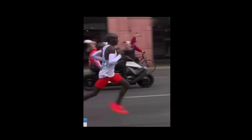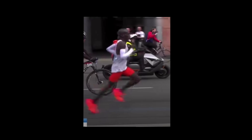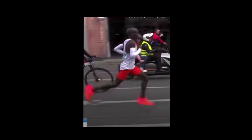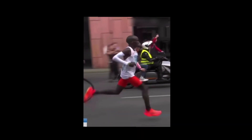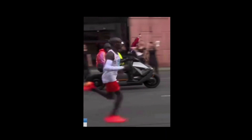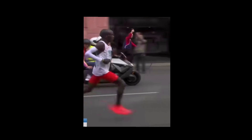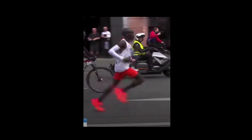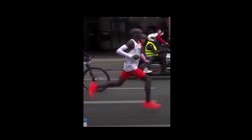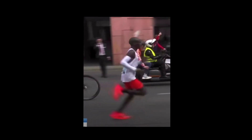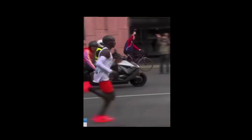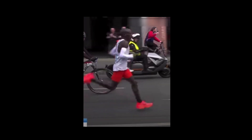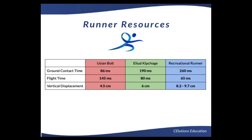There are no elements of overstriding. His tibial shank is almost vertical at initial contact. He is running with minimal heel strike and has significant hip extension, resulting in a lot of power generation with each step. However, compared to Usain Bolt, he has longer ground contact times, less flight time, and slightly more vertical displacement. Now, compared to an average distance runner, Eliud Kipchoge has excellent ground contact time, vertical displacement, and flight time. Let's orient ourselves to this chart comparing these running data parameters.